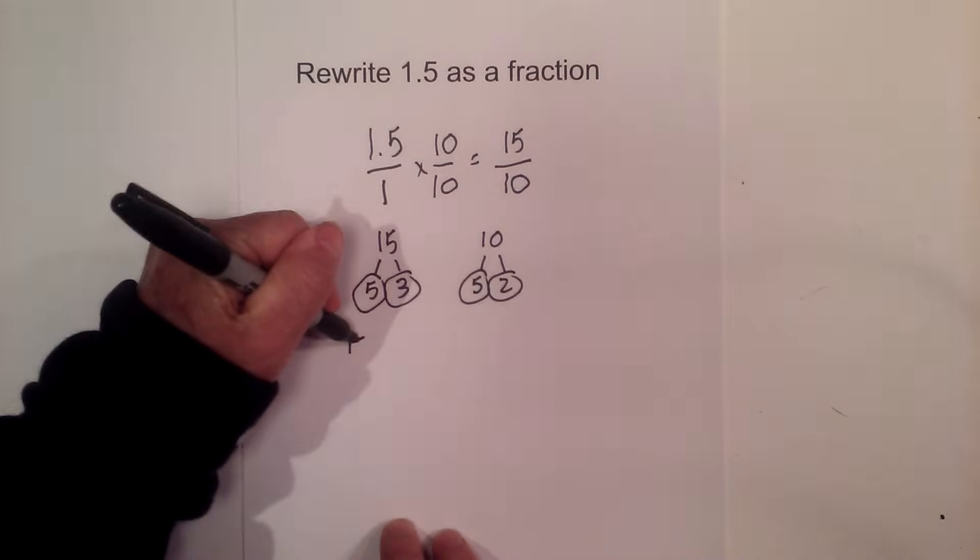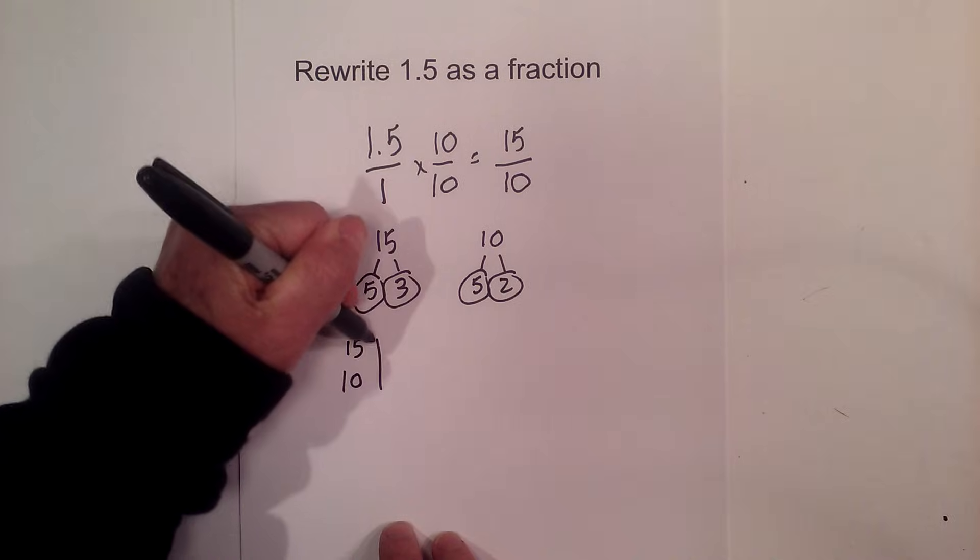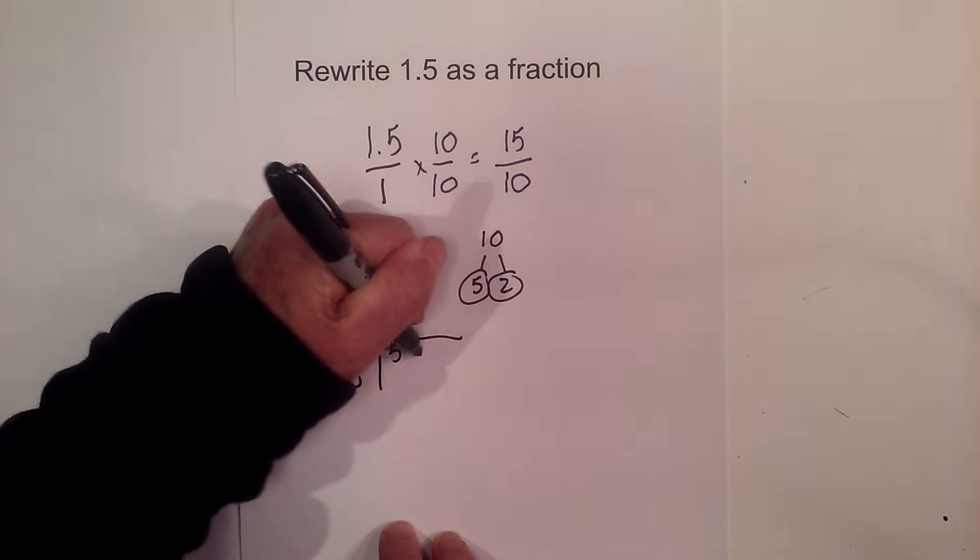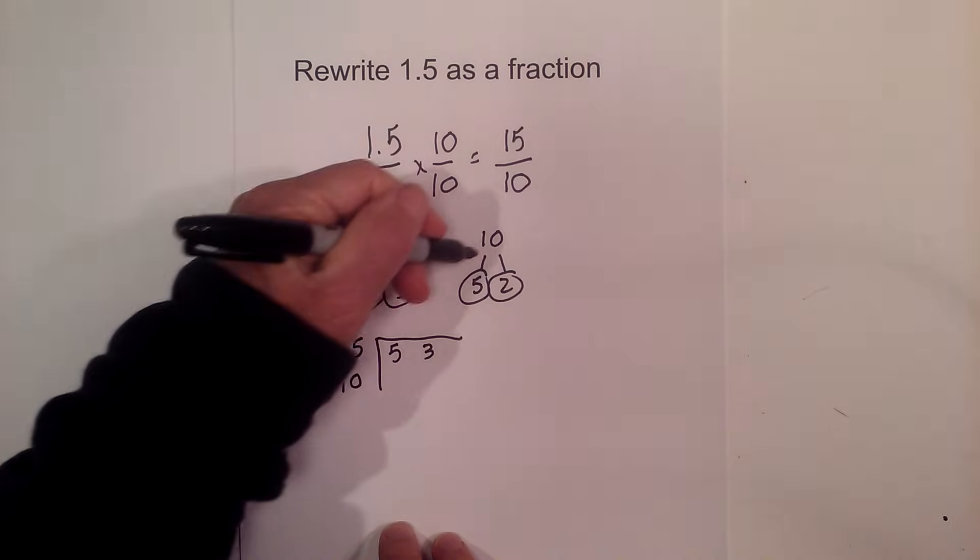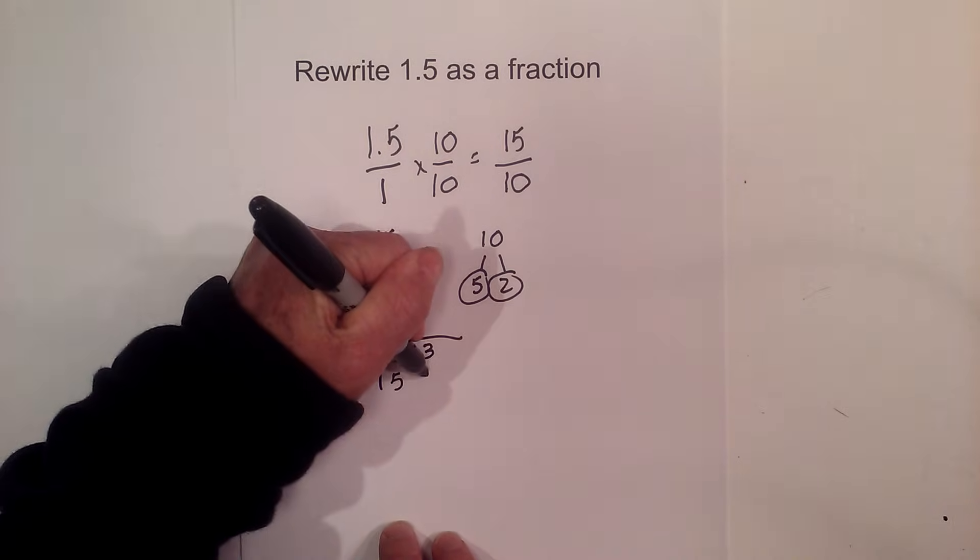What I think is the easiest thing to do is just create a little chart and write the prime numbers in the chart. The prime numbers of 15 are 5 and 3, and for 10 are 5 and 2.